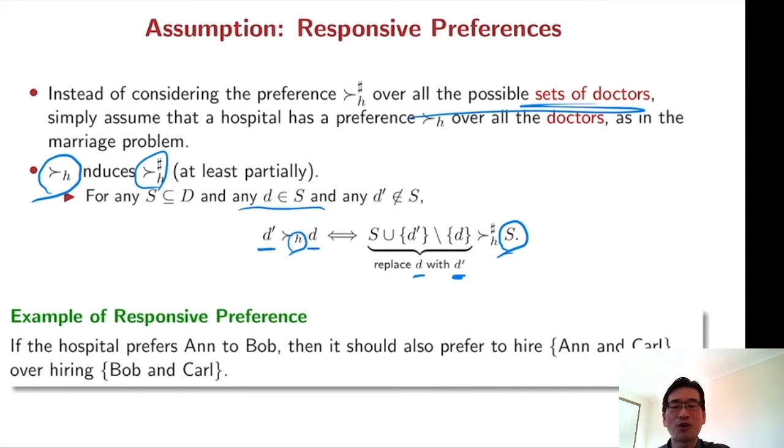So for example, if a hospital prefers Ann to Bob, then the hospital should also prefer to hire Ann and another doctor Carl over hiring Bob and Carl.